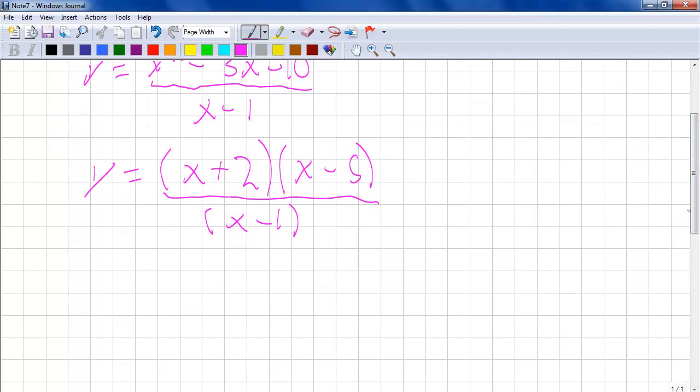Due to the nature of this function, there are no holes because there are no common factors on the top and the bottom. If there is an x minus 1 on the top, then the top and the x minus 1 on the bottom would cancel out and create a hole. However, that is not the case.